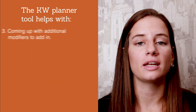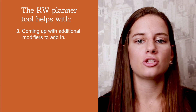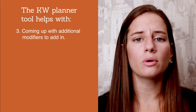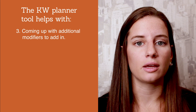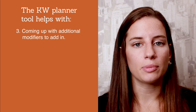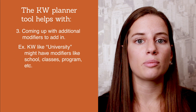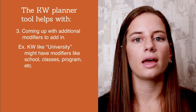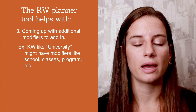Another way is for you to be able to find additional modifiers to add into existing keywords. You're able to place keywords into the Keyword Planner tool, and then Google will spit out additional terms that they think you should be adding with new modifiers. So for example, one of my clients is in the higher education space, and I had put 'university' in, and then they were able to spit out 'school,' 'classes,' 'program,' et cetera, for me to be able to add those on to my existing keywords.